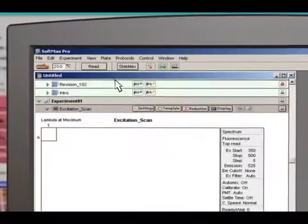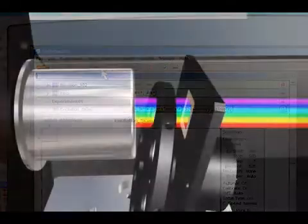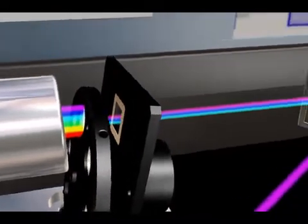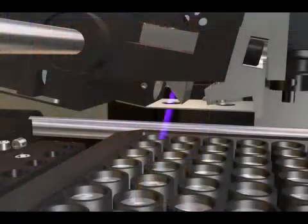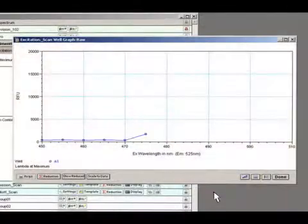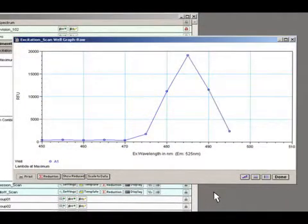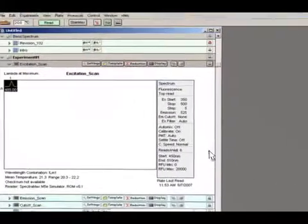Once you click Read, SpectraMax automatically selects the proper cutoff filter and scans the monochrometer through the selected excitation wavelength range. This raw data is processed by SoftMax Pro and we are presented with a real-time graph of the results, complete with the excitation maximum.